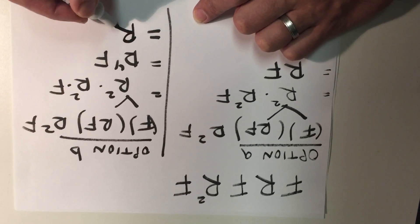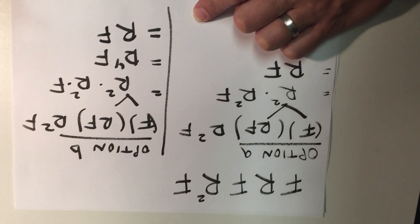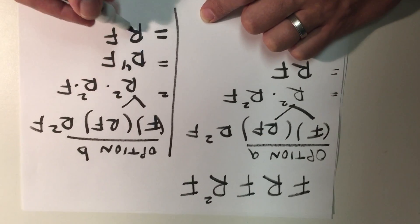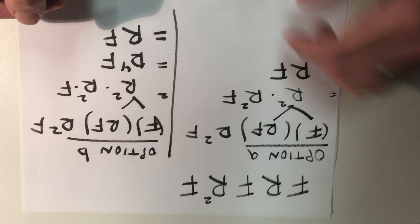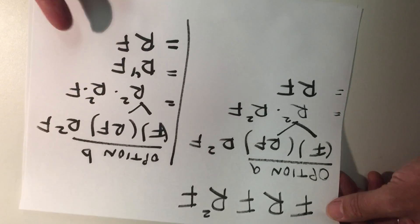So R to the fourth is really just equal to R, and I have the F there left over. So that's my second way of doing it.